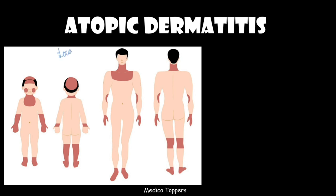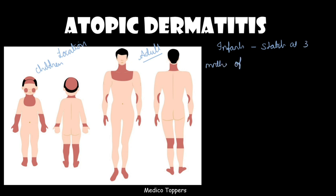Now comes atopic dermatitis. The location differs between age groups. In infants, it starts at three months of age — mothers often get frightened. We ask for a family history of atopicity such as bronchial asthma or recurrent skin infections in blood relatives. In infants there will be itchy lesions on the face and other parts, with sparing of the diaper region.